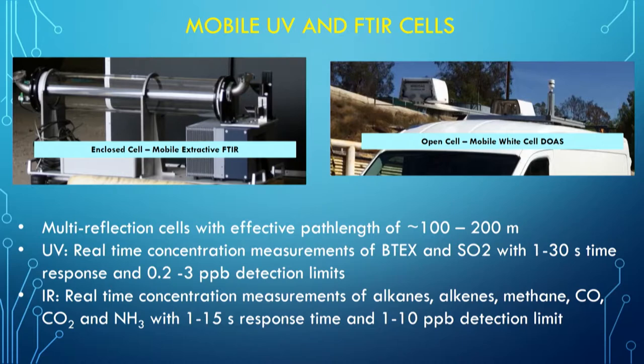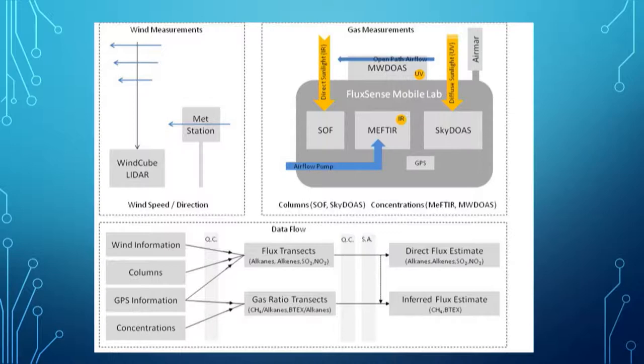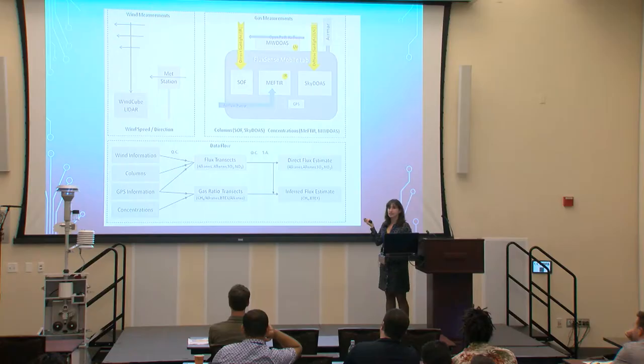Looking at the entire system, in order to get the emissions out you also need another very big component: wind speed and wind direction. When you calculate fluxes, the biggest error and uncertainty is not in the optical measurements themselves — those are based on very well-known absorption cross-sections and the measurement error is very low. The biggest uncertainty actually comes from the wind, because you have to have a very accurate vertical wind distribution.